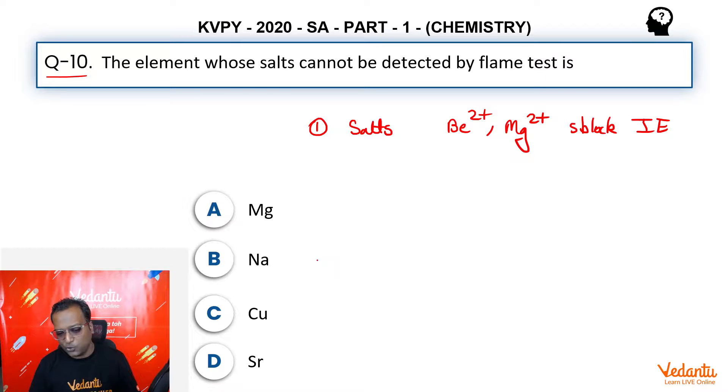Now, we know that sodium gives which kind of color? Which color? It gives golden yellow, right? Copper gives a blue-green color to our flame and strontium gives a brick red color to the flame.